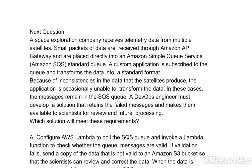Next question: a space exploration company receives telemetry data from multiple satellites. Small packets of data are received through Amazon API Gateway and placed directly into an Amazon Simple Queue Service standard queue. A custom application is subscribed to the queue and transforms the data into a standard format. Because of inconsistencies in the data that the satellites produce, the application is occasionally unable to transform the data. In these cases, the messages remain in the SQS queue.